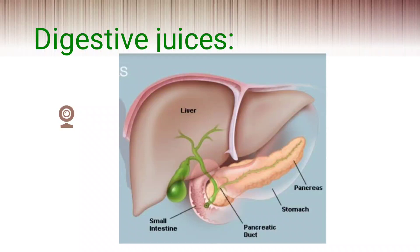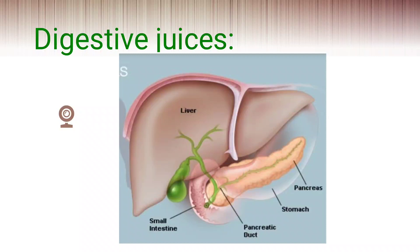Pancreas is a leaf-like structure present beneath the liver. It produces three main important digestive juices which mainly digest carbohydrates, fats and proteins.